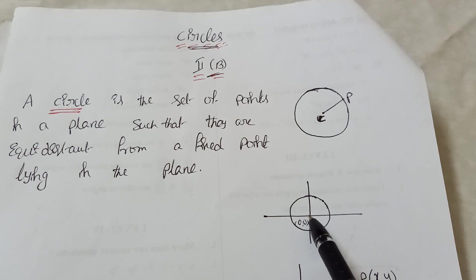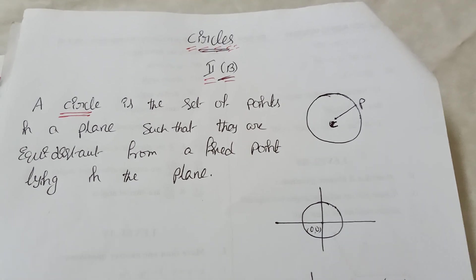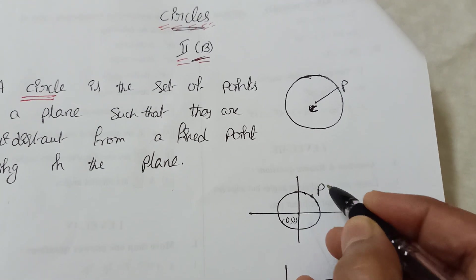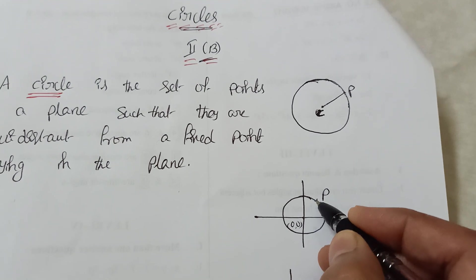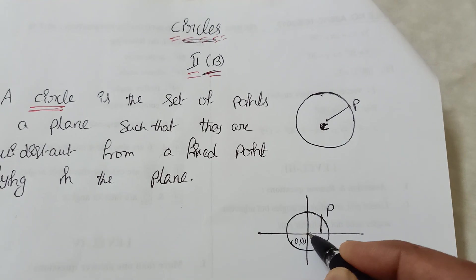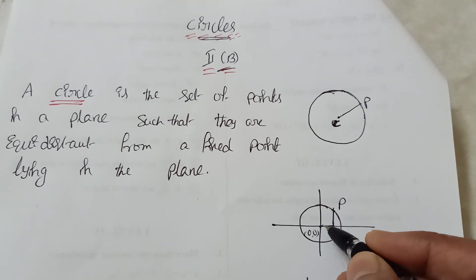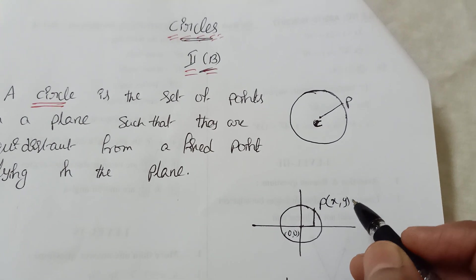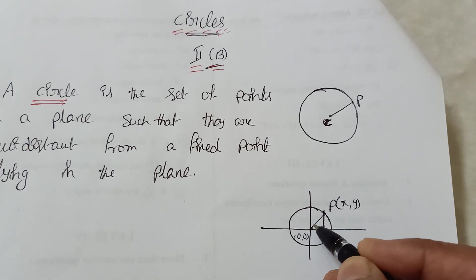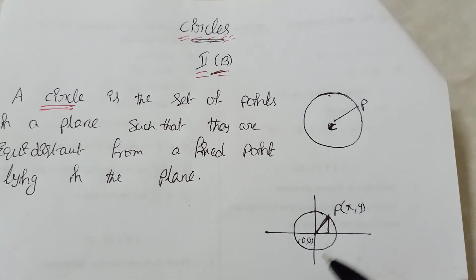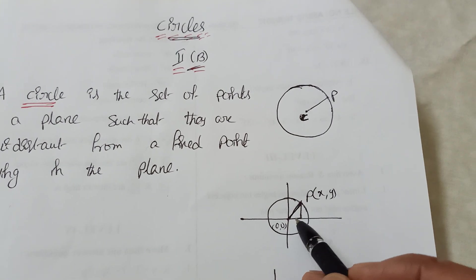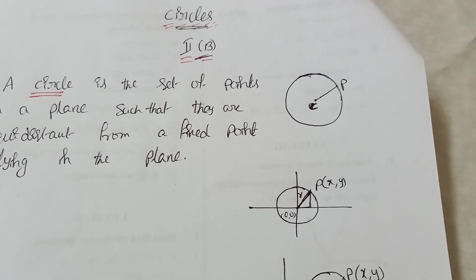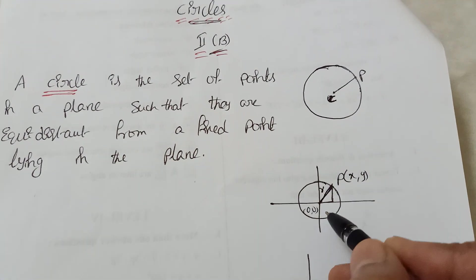This is the circle definition. Now, the center is a point. Suppose the circle is passing through the origin — passing through the origin — then what is the equation of the circle? Suppose I'm taking a point P. Now tell me, this point P will be here. The x-axis and y-axis, we want this equation — P is the point x comma y.